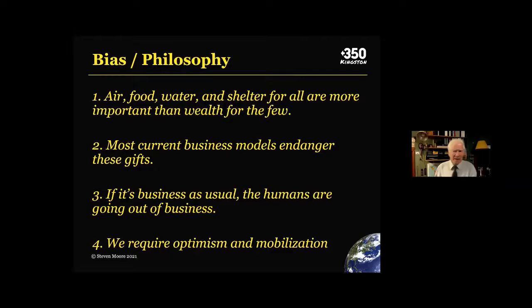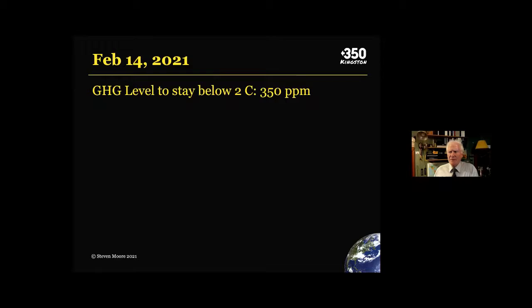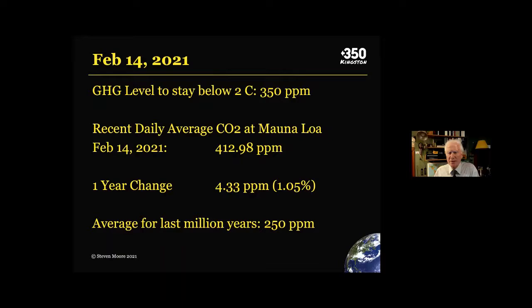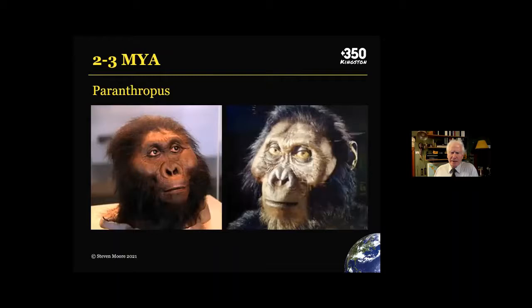Just a quick snapshot. We're aiming to keep the greenhouse gas level below 350 parts per million. The daily average at Mauna Loa was 412 parts per million. The change over the last year has been 1%. And the average GHG level for the last million years has been 250 parts per million — so we're way over the average. The last time CO2 concentrations were as high as they are today, our ancestors looked very different.